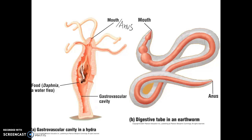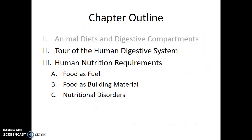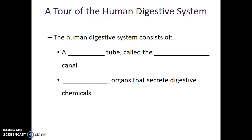One end of the earthworm's digestive tube functions in ingestion — bringing food into the body — and the other opening functions for elimination, or the removal of feces, the unabsorbed, undigested material. Now let's start taking a tour of the human digestive system. The human digestive system consists of a digestive tube given a specific name: the alimentary canal.